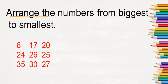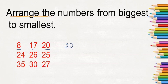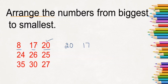Next, arrange the numbers from biggest to smallest. The numbers are 8, 17, and 20. Which is the biggest number? It is 20. Write 20. The second bigger number — 8 or 17? It is 17. Write 17. And the smallest number is 8, so write 8 at last.